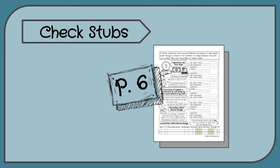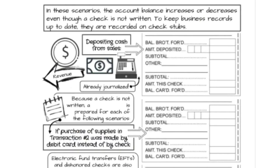Page six has more about check stubs. When the account balance increases or decreases without a check being written, those changes are still recorded on the check stubs to keep business records up to date. When depositing cash from sales — say the balance brought forward is $600 and we deposit $300 on April 15th — we record the subtotal showing our account balance increased. Remember, when we receive cash from sales, that's when we journalize it, so we don't journalize again when depositing, as that would double-record the transaction.